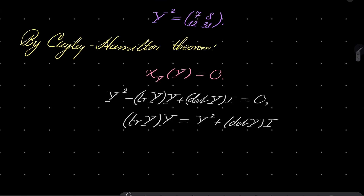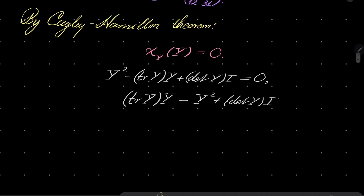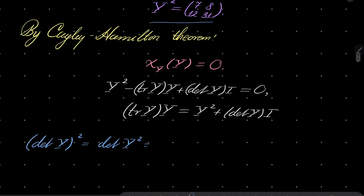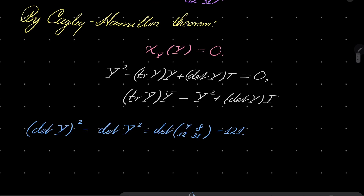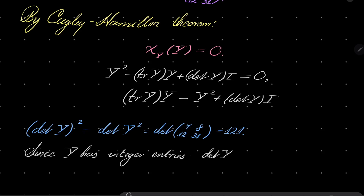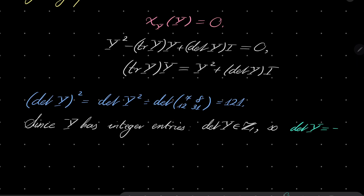First, we will find det(Y). Notice that det(Y squared) equals det(Y) squared. But Y squared is [[7, 8], [12, 31]], so det(Y squared) equals 7 times 31 minus 8 times 12, which is 121. Since Y has integer entries, det(Y) is also an integer, and since its square is 121, it must be either plus or minus 11.